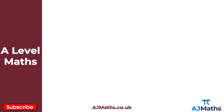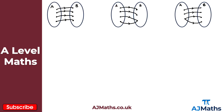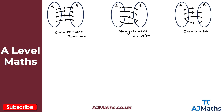A function can be either one-to-one or many-to-one. I've got here three diagrams — two examples of functions, and the last example is not a function. The first example is a one-to-one function, and the second example here is a many-to-one function. But this last example here is not an example of a function — this is what we call one-to-many.